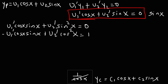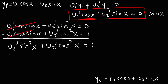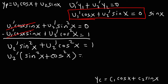Adding the two equations eliminates the u1 prime terms, leaving u2 prime sine squared x plus u2 prime cosine squared x equals 1. Factoring out u2 prime and applying the Pythagorean identity sine squared plus cosine squared equals 1, we get u2 prime equals 1. Integrating both sides, u2 equals x.